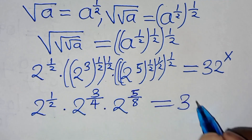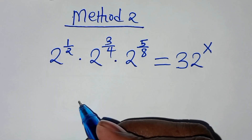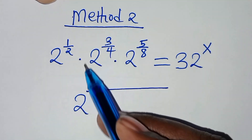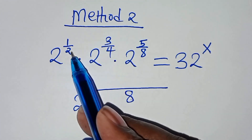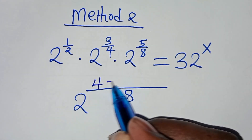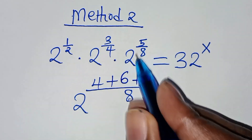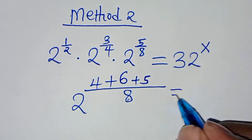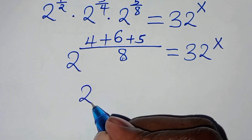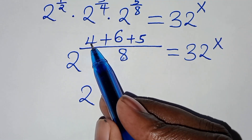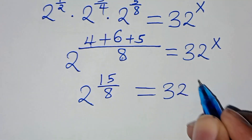This is equal to 2 raised to the power of x. Finding the LCM of 2, 4, and 8 — the LCM is 8. So 8 divided by 2 is 4, times 1 is 4; plus 8 divided by 4 is 2, times 3 is 6; plus 8 divided by 8 is 1, times 5 is 5. So we have 2 to the power of 4 plus 6 plus 5, which is 15, all over 8. This is equal to 32 raised to the power of x.